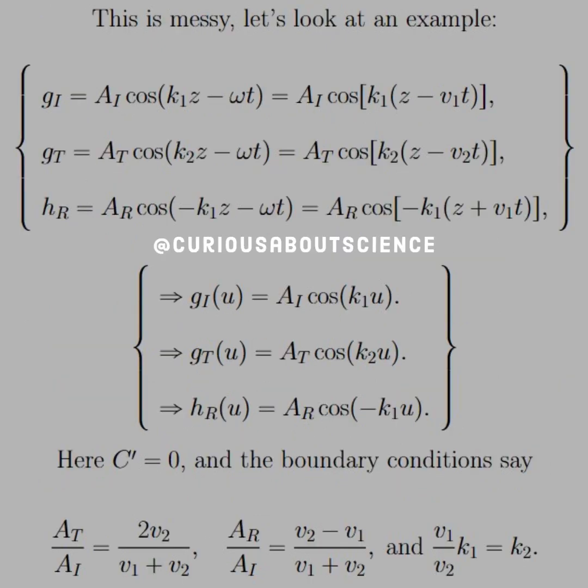This is all messy, so let's have more of a concrete example to look at. If we have g_I equals A_I cosine k_1 z minus omega t, then we have A_I cosine k_1 factored out z minus v_1 t. g_T similarly, and h_R similarly with the respective plus or minus signs with their directions. And we see that we can rewrite with dummy variable u in there. Here we see that C prime is zero.